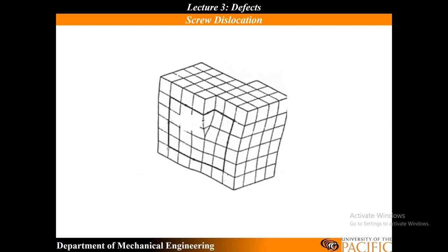What about this next one? Again, I can kind of see the same idea. I'm going to put my tangent vector coming out of the board here, so I need to go this way in terms of my circuit. Starting right at the edge — 1, 2, 3, 4. Then 1, 2, 3, 4, 5, 6. Then 1, 2, 3, 4, 5, 6. Then 1, 2, 3, 4, 5, 6. Then 1, 2, 3, 4 and I need to go 1, 2 more. This is my start to finish — that's my Burgers vector. So here, my Burgers vector and T are antiparallel, so this is a left screw.